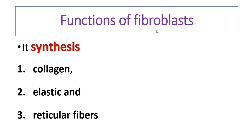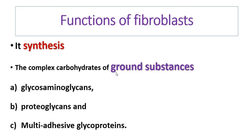All fibers of the connective tissue — collagen fiber, elastic fiber, and reticular fiber — are synthesized by fibroblasts. Fibroblasts also synthesize the ground substance of the connective tissue. The ground substance is formed by glycosaminoglycans, proteoglycans, and multi-adhesive proteins, so the extracellular matrix of the connective tissue is formed by fibroblasts.